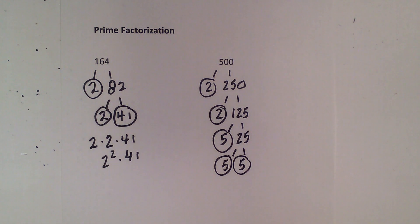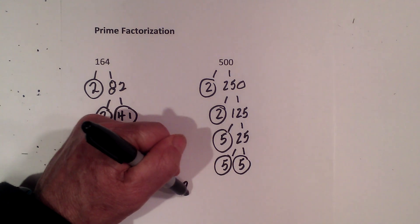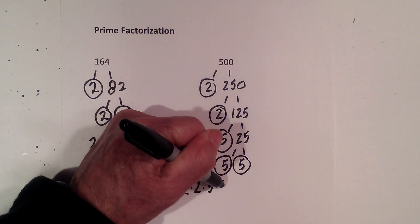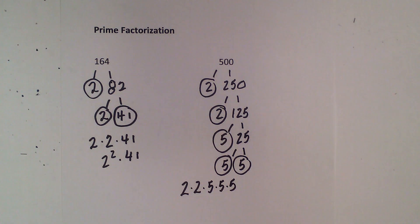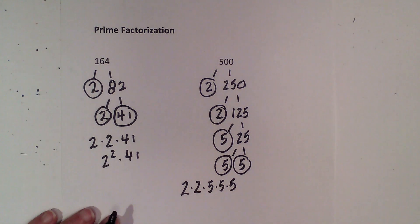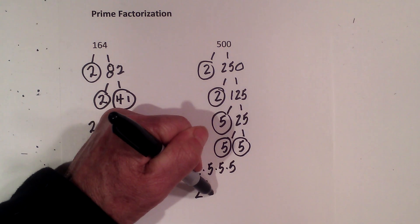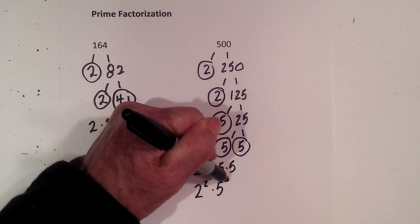So now the prime factorization of 500 is 2 times 2 times 5 times 5 times 5, or 2 squared times 5 cubed.